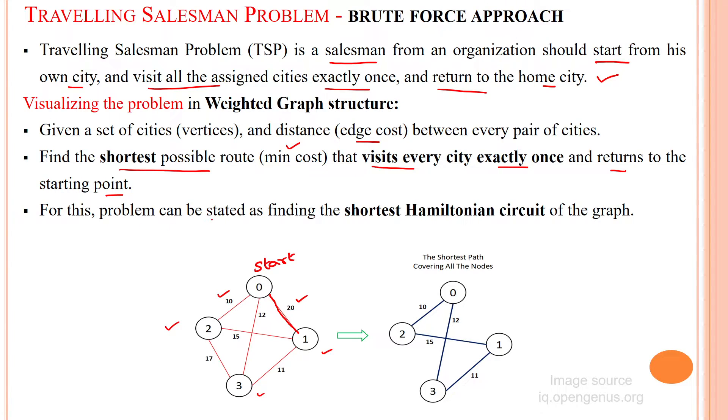For this problem we can find the shortest Hamiltonian circuit of the given graph structure. So first we have to make the salesman problem into graph structure. Then based upon the graph structure we can apply the Hamiltonian circuit problem to find out the shortest path between source and reaching all the destinations. Finally he has to return to the starting point.